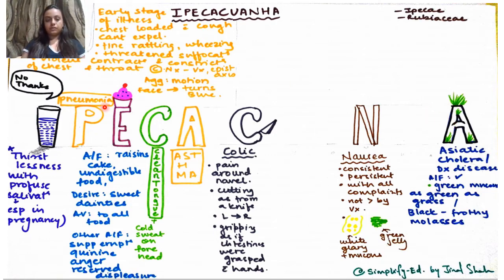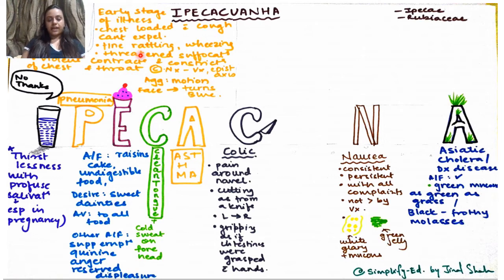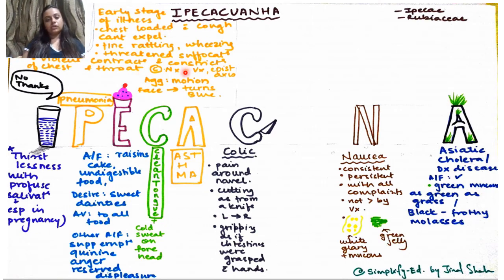P is for pneumonia and A is for asthma. Ipecac is indicated in the early stages of illness where the chest is loaded with mucus but the patient can't expectorate. It is often compared with Antimonium Tartaricum. There is fine rattling, wheezing, threatened suffocation, and violent contraction and constriction of the chest and throat. As a concomitant, nausea, vomiting, and epistaxis are present; aggravation on motion, and the face turns blue.